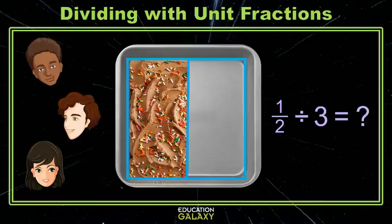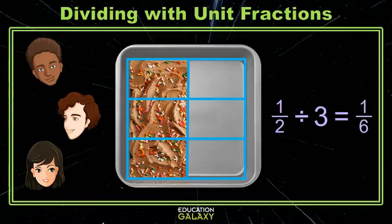Let's take our half, let's slice it evenly into three pieces, and now you can see that each friend gets one-sixth of the whole pan of brownies. Similar to the last style of problem we did, there's a relationship between our answer and the whole number in the denominator in the original division problem. Our answer is a unit fraction where the denominator is a product of those two numbers.